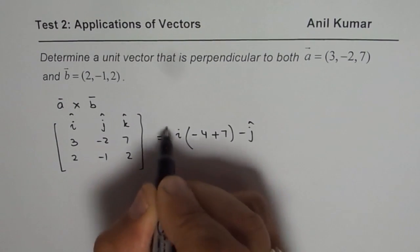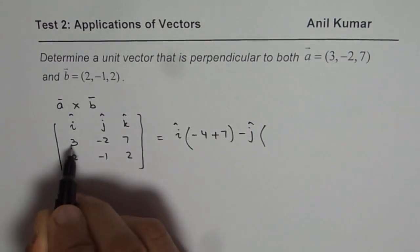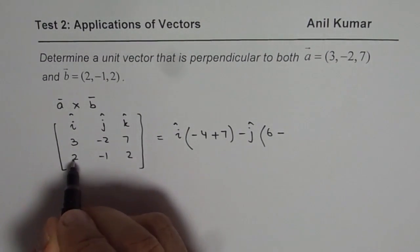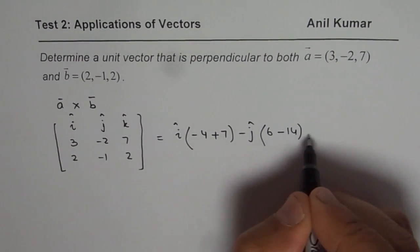Minus j. So 3 times 2 is 6, minus 2 times 7, which is 14. Plus k.